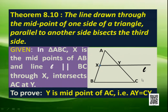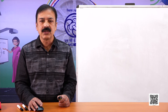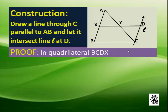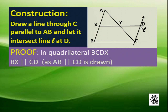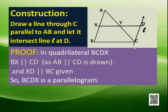To prove AY equals CY, we use the same construction: draw a line through C parallel to AB and let it intersect the extended line L at D. Then in quadrilateral BCDX, BX is parallel to CD by construction, and XD is parallel to BC as given. Since opposite sides are parallel, BCDX is a parallelogram.